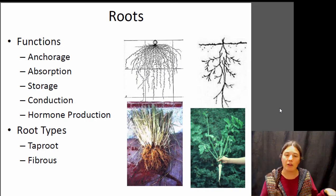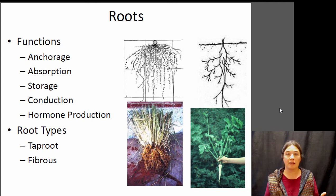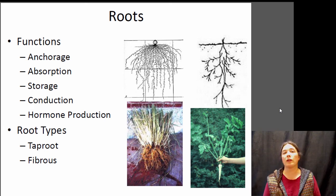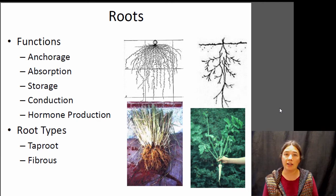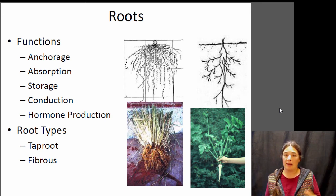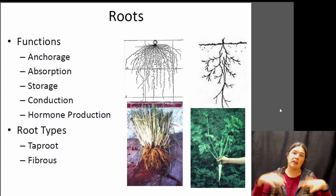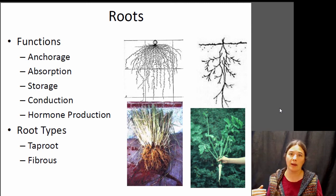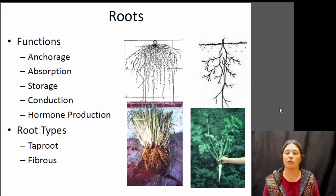Roots primarily anchor the plant to the ground so it doesn't get washed away or blown over. They're also really important for absorbing things the plant needs from its environment — taking up water and nutrients from the soil. Some roots are also used for storage. A carrot, for example, is a plant that lives for two years. In its first year it grows leaves, photosynthesizes, makes sugar, and puts all that sugar into its root — that's the nice big orange sweet vegetable we eat. The next year the plant grows back from the root using those stored sugars to reproduce and make flowers. So when you eat a carrot, you're hijacking its storage for future use.